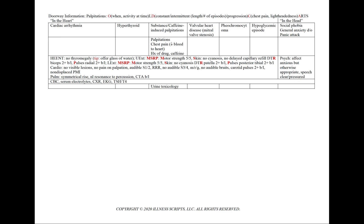We'll add a urine toxicology. In valvular heart disease — for example, mitral valve stenosis — we can see palpitations along with chest pain or lightheadedness, and a history of a childhood murmur or rheumatic fever. We'll order an echocardiogram.